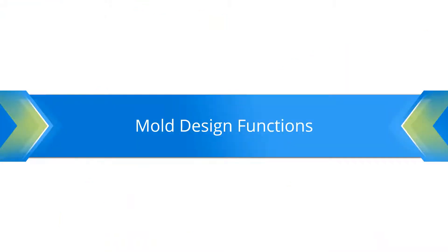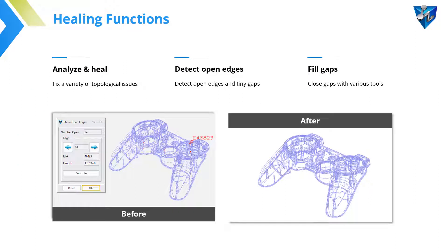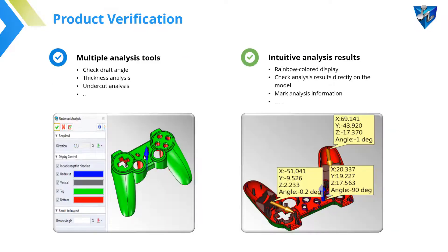Next I will introduce the mold design functions in Xero3D. The first one is model preparation before mold design. Xero3D has an independent healing module for mold repairing. It can analyze and heal tiny unmatched faces automatically. It also detects open edges and fills the gap on models. Xero3D offers a lot of analysis tools, such as draft angle, thickness, and undercut analysis.